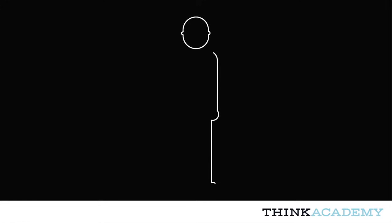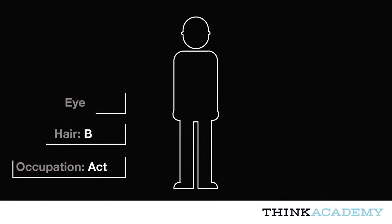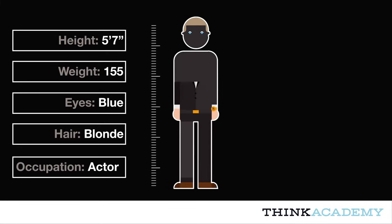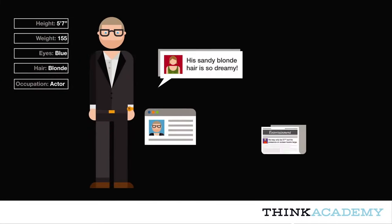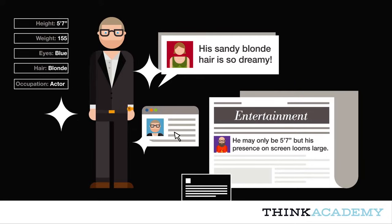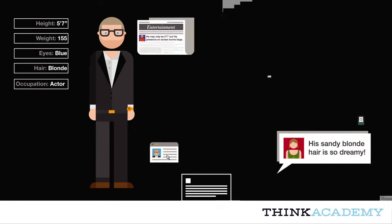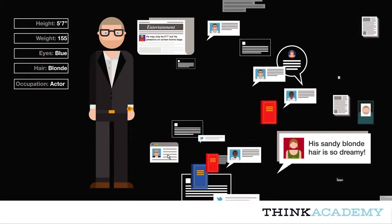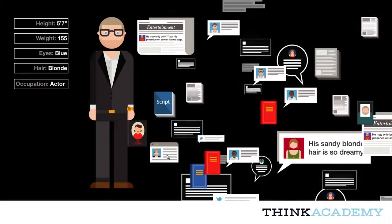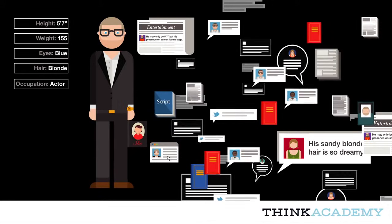Unlike conventional approaches to computing, which can only handle neatly organized structured data, such as what is stored in a database, Watson can understand unstructured data, which is 80% of data today, all of the information that is produced primarily by humans for other humans to consume. This includes everything from literature, articles, research reports, to blogs, posts, and tweets.